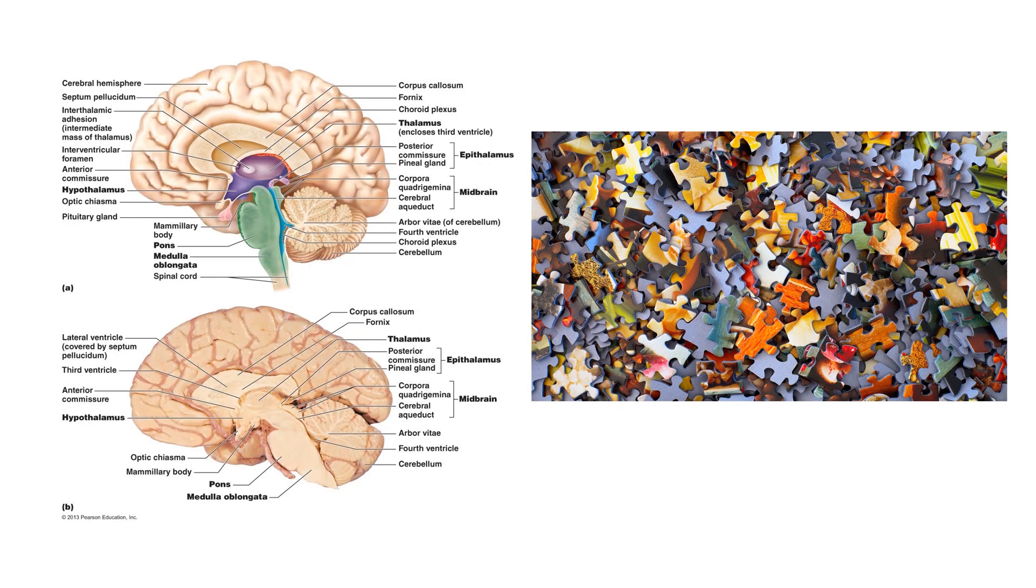We have discussed the development of the different parts of the CNS: the telencephalon, diencephalon, midbrain, hindbrain, and spinal cord. Now let's put all the individual pieces together to make a whole central nervous system.